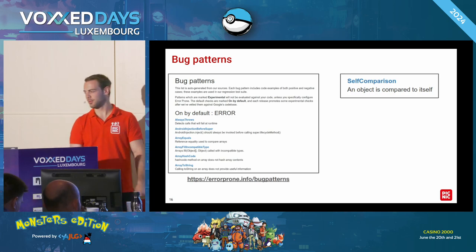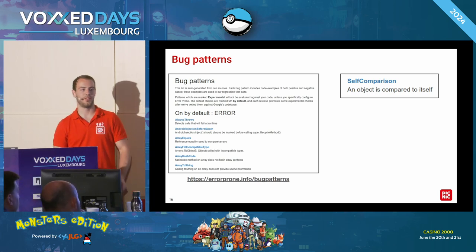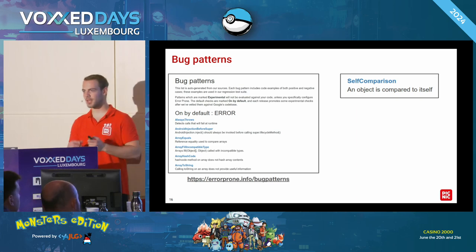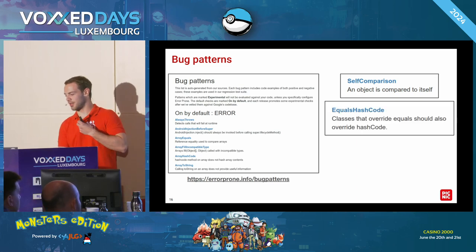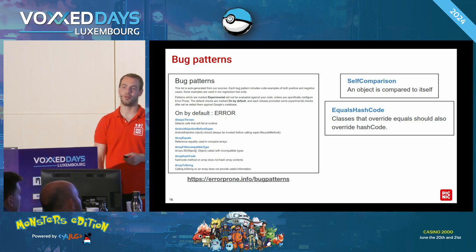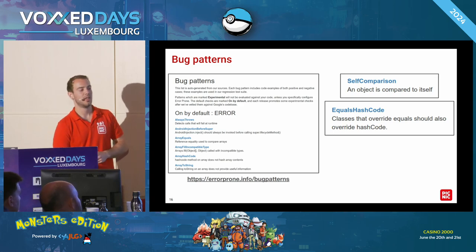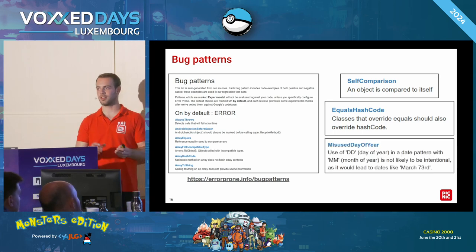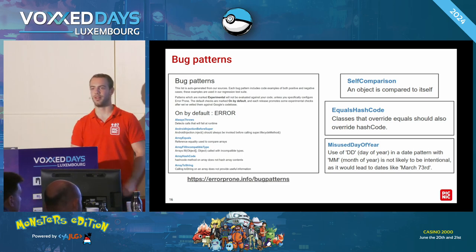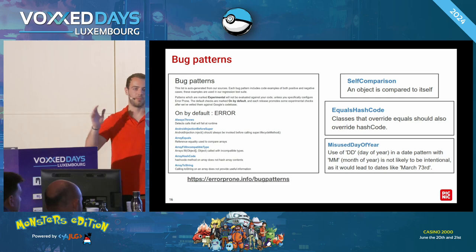I want to highlight a few. The self-comparison one — if you're writing code and you're actually doing a self-comparison, it will flag that for you. Another is that if classes override equals, you should also have the hash code, and if you don't you might run into some problems. There are also quite some checks that help you with the use of date times, because you can easily specify something wrong with dates, and it will say hey, probably you are introducing a bug here.